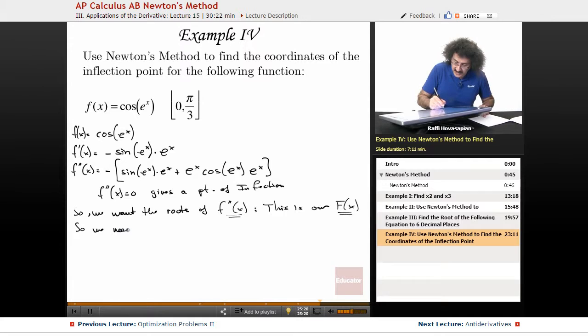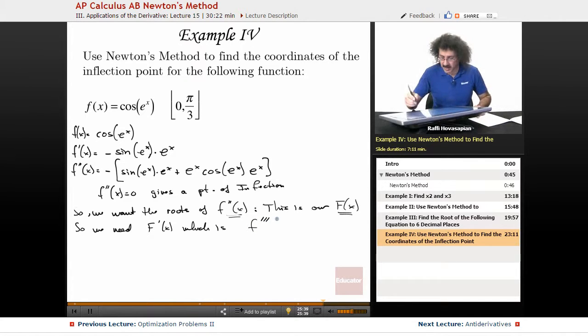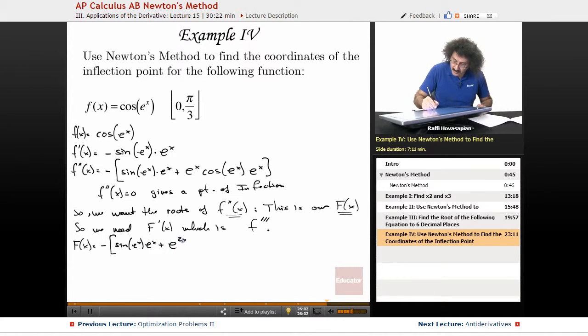We need, because of Newton's method, the function that we're looking for, we also need its derivative. So we need capital F prime of x, which is actually f triple prime. So one more derivative. Let's go ahead and do, so we said that f of x is equal to minus sin e to the x times e to the x plus e to the 2x times the cosine of e to the x.